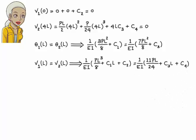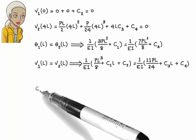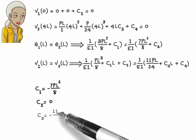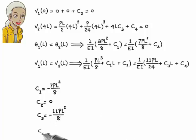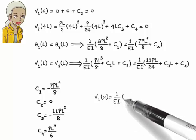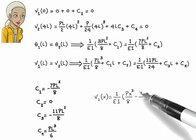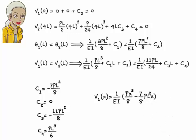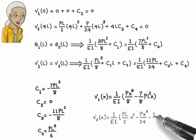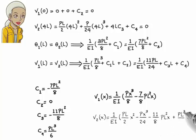Solving the four boundary equations simultaneously for the constants, we get C1 = −7PL²/8, C2 = 0, C3 = −11PL²/8, and C4 = PL³/6. Therefore, the deflection equations can be written as: V1 = 1/EI × (Px³/8 − 7PL²x/8), and V2 = 1/EI × (PLx²/2 − Px³/24 − 11PL²x/8 + PL³/6).